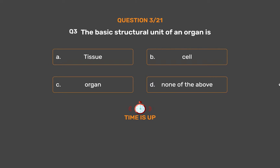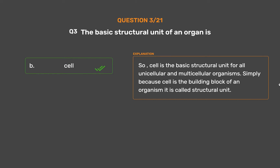The correct answer is Option B: Cell. Cell is the basic structural unit for all unicellular and multicellular organisms. Simply because cell is the building block of an organism, it is called the structural unit.